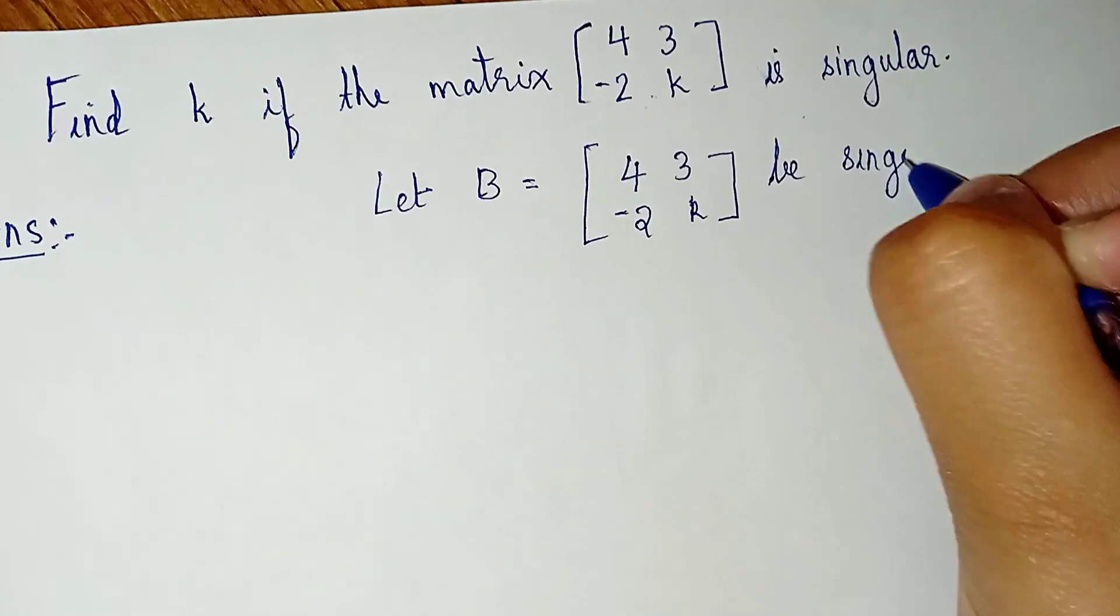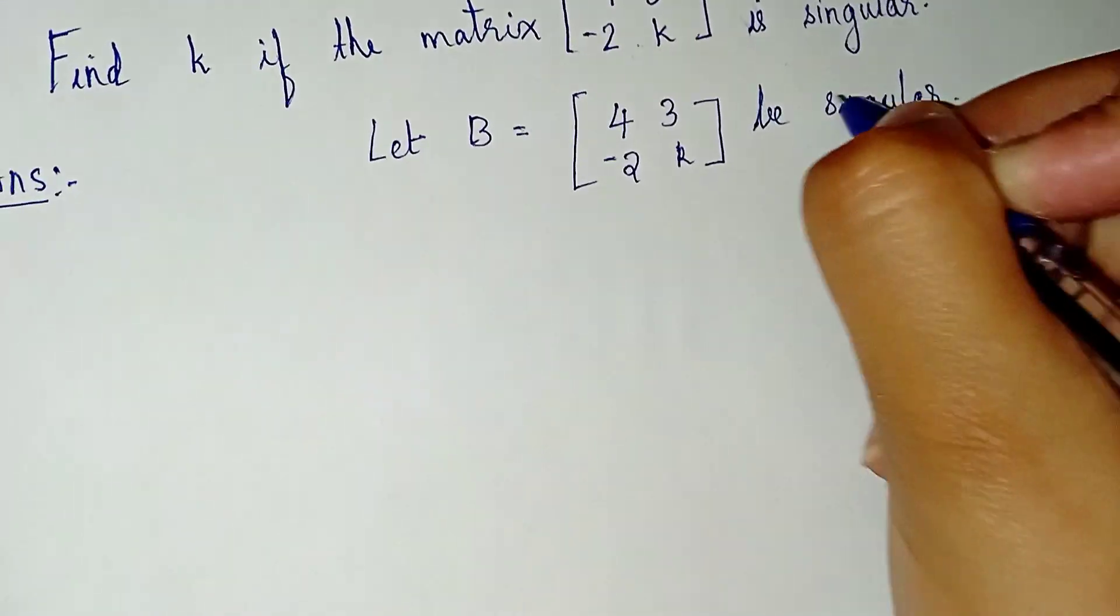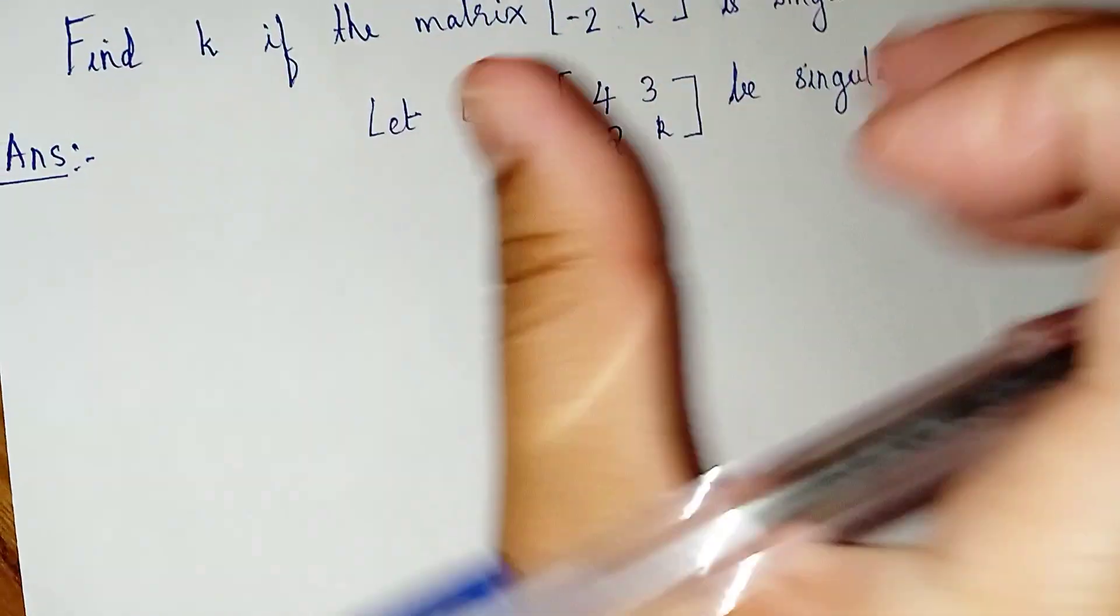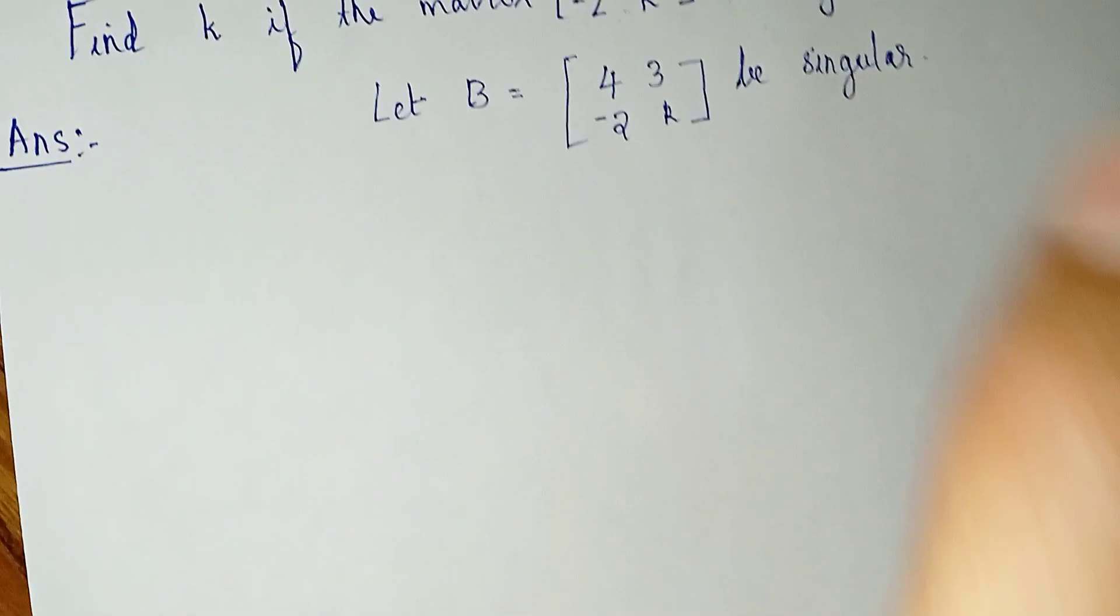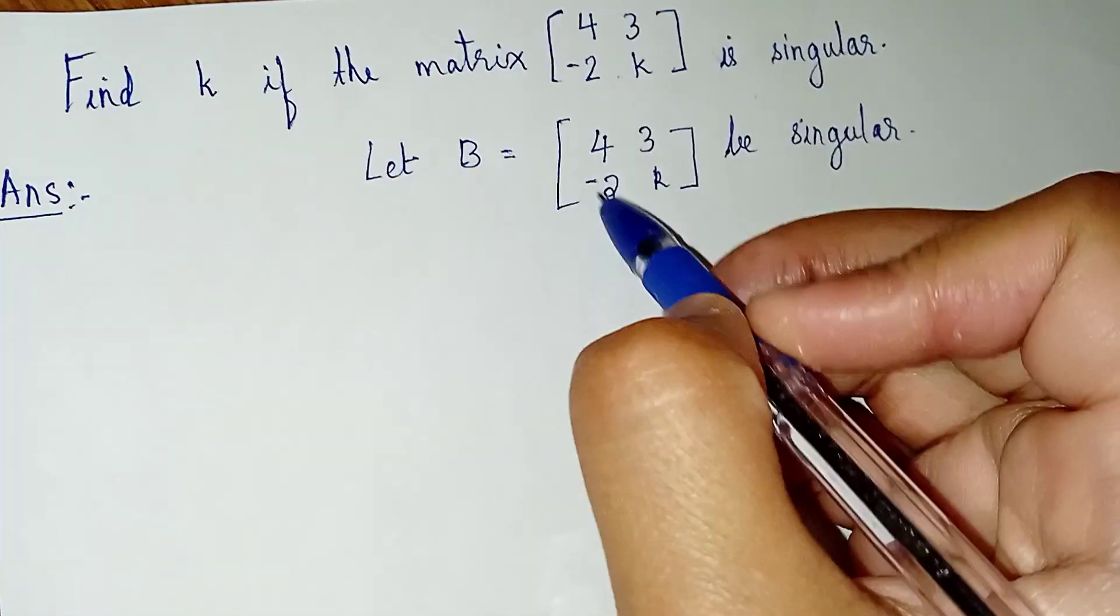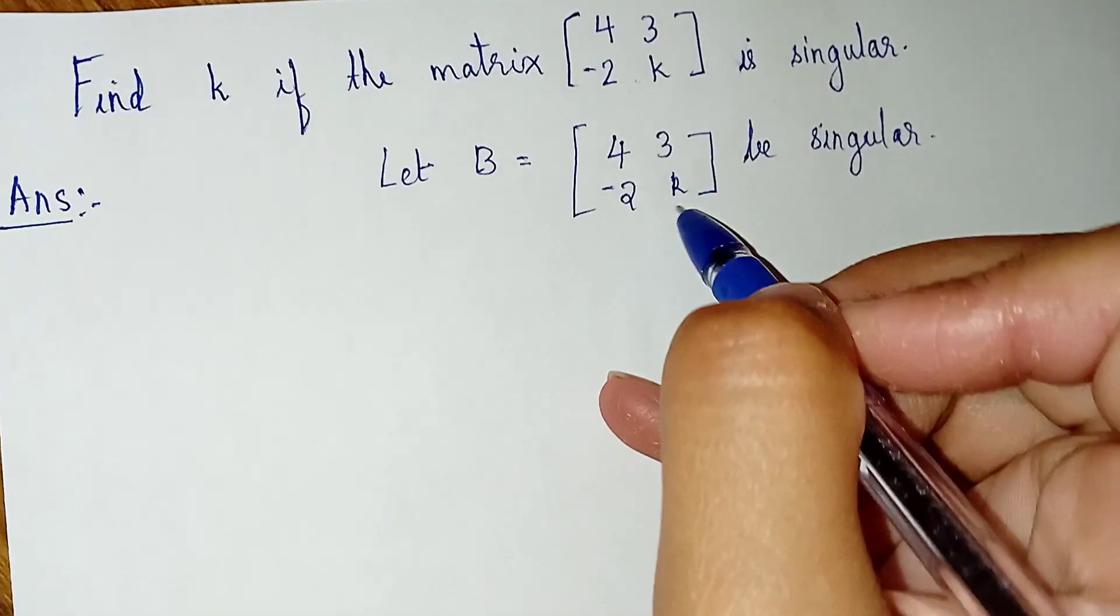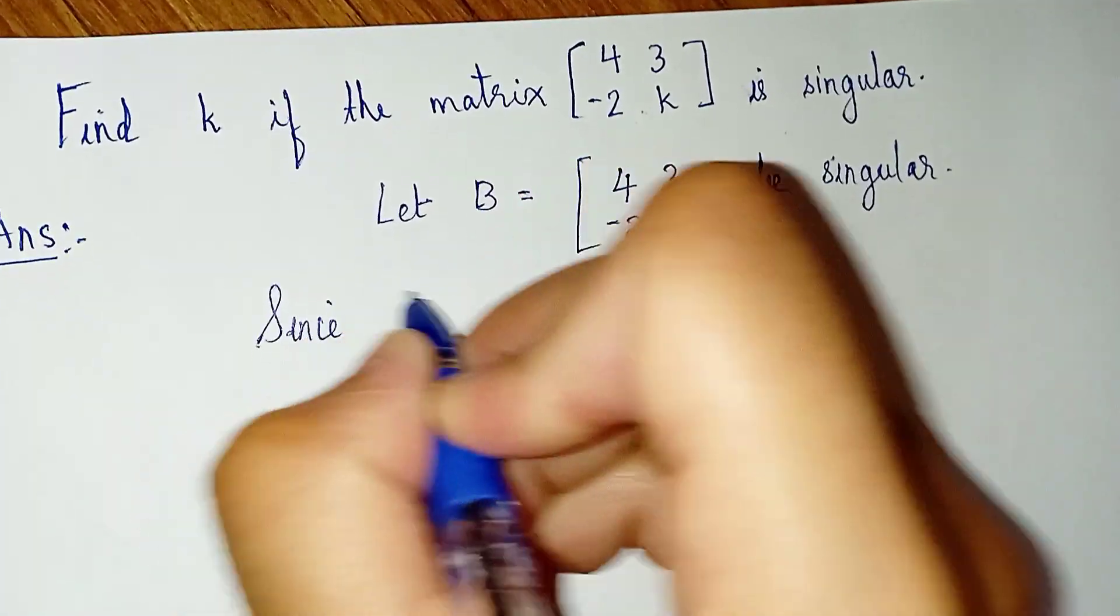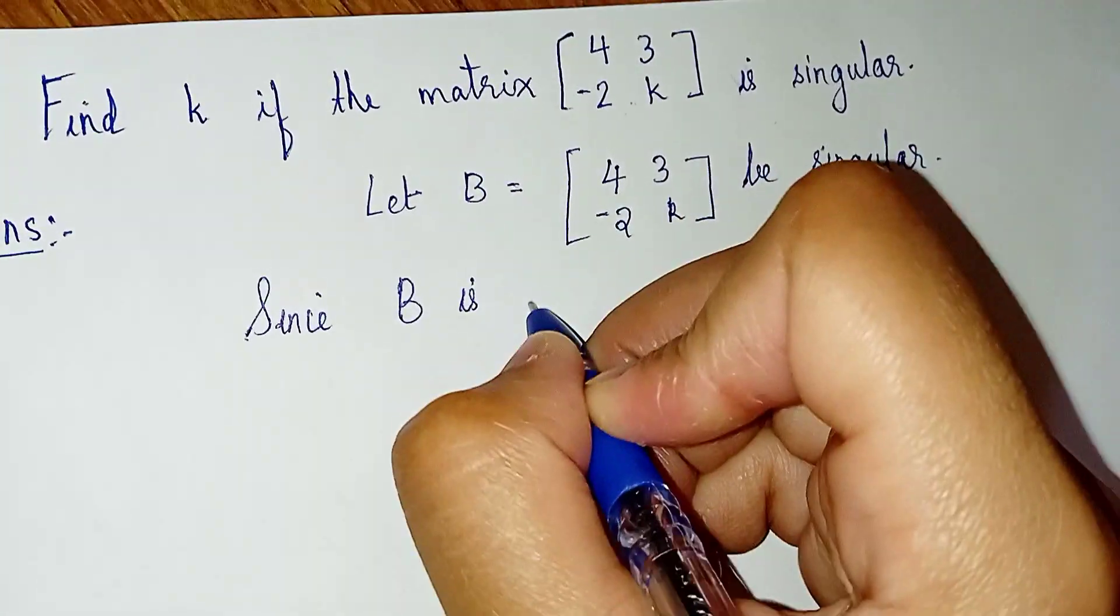First, we will assume that this matrix is singular. Now if this matrix B is singular, we know that a matrix is said to be singular if the determinant of that matrix is equal to 0. So since B is singular, we have determinant of B equal to 0.